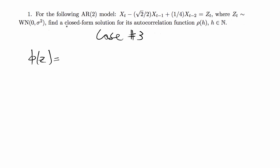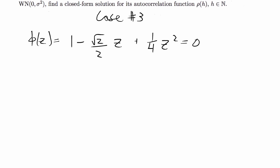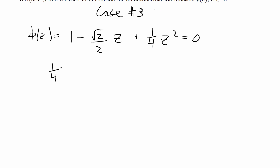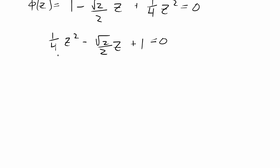The first thing I'll do is find the causal roots. For the given AR2, that's 1 minus the phi1 coefficient — which is negative square root of 2 over 2 — times z, plus one-fourth z squared, set equal to zero. Rearranging: one-fourth z² minus (√2/2)z + 1 = 0. Multiplying through by 4 gives z² − 2√2·z + 4 = 0.